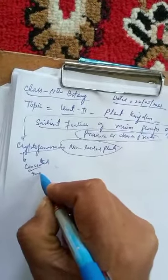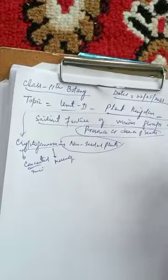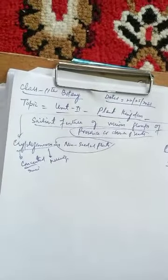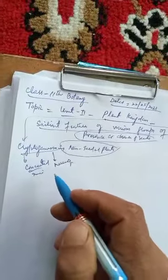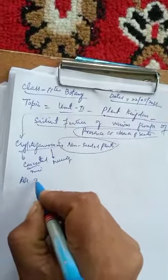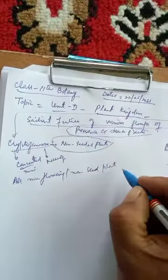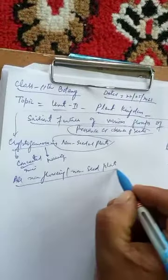For Phanerogamae, 'phanero' means visible and 'gamae' means marriage. Cryptogamae includes all non-flowering or non-seed plants, which have been placed in this group. All seed-bearing plants are included in Phanerogamae.